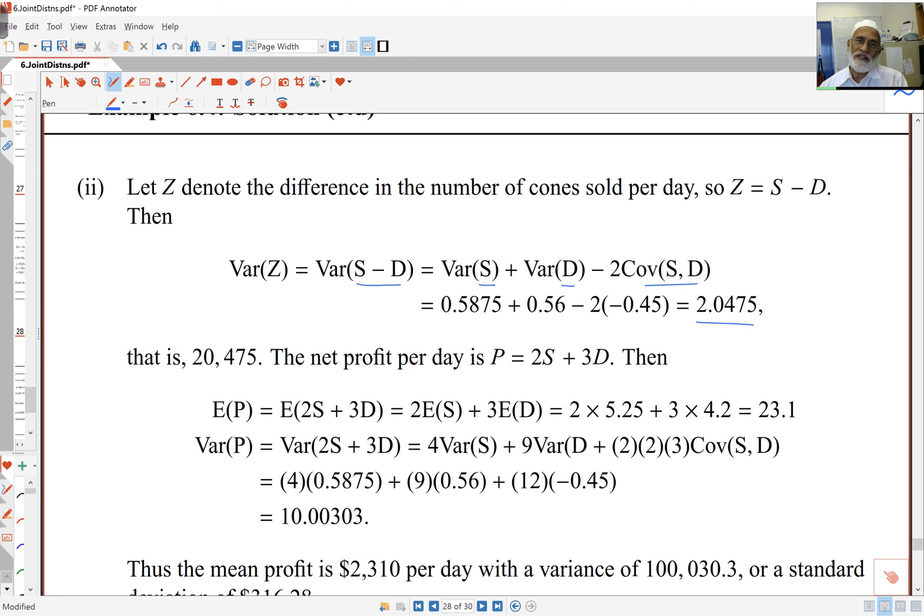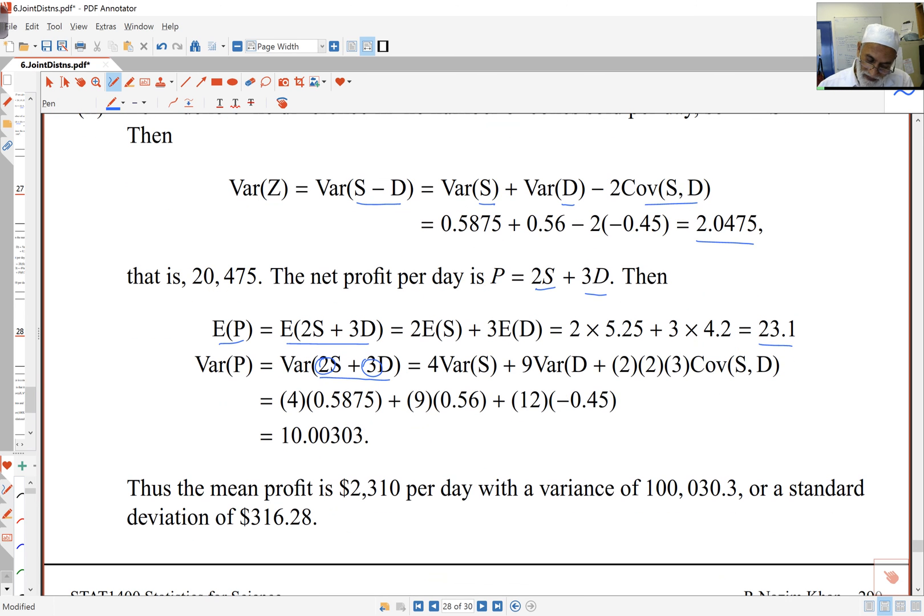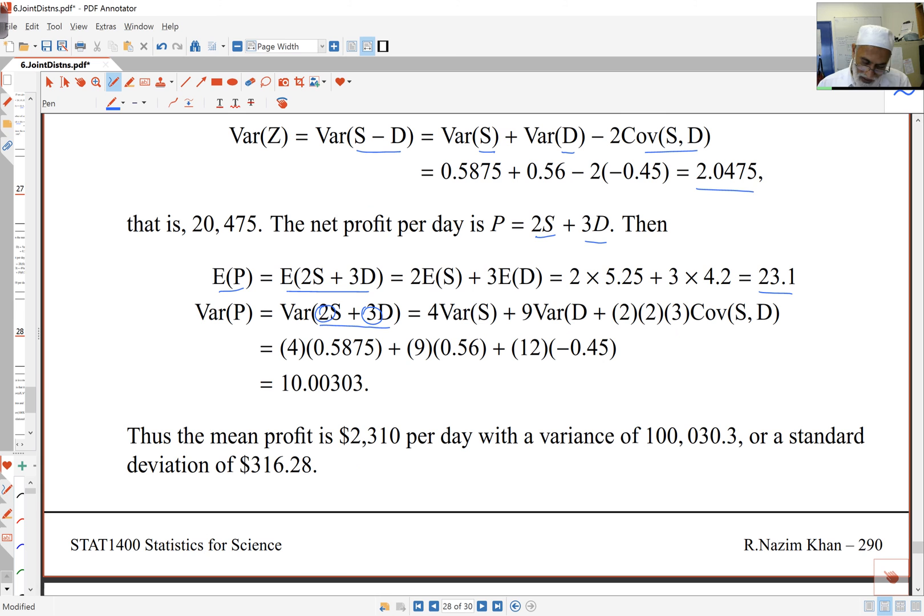Profit is $2 for the single and $3 for the double. That means 2 times the number of single cones sold and 3 times the number of double cones sold. The mean is simply the mean of 2S plus 3D. That breaks up, and I get 23.1. The variance of P is the variance of 2S plus 3D. My formulas tell me this is 4 times the variance of S (2 squared), and 9 times the variance of D (3 squared), and 2 times 2 times 3 times the covariance of S and D. I get 10.00303. Because this is in thousands, I multiply by 100. The mean profit is times 100, 2310. The variance is times 100 squared. The standard deviation is 100 times that.